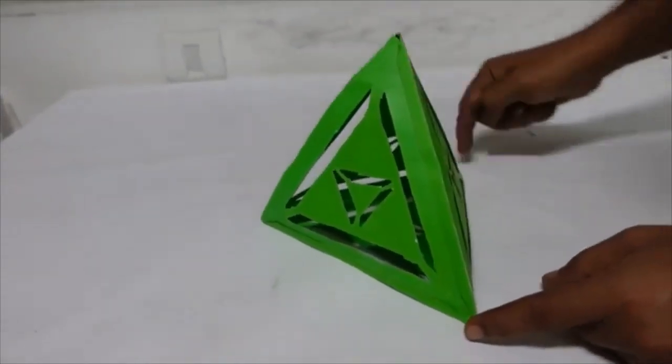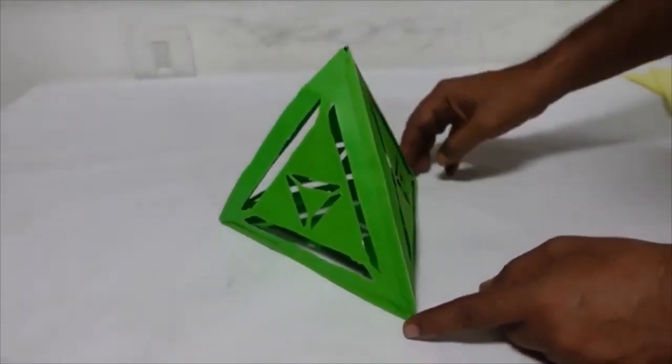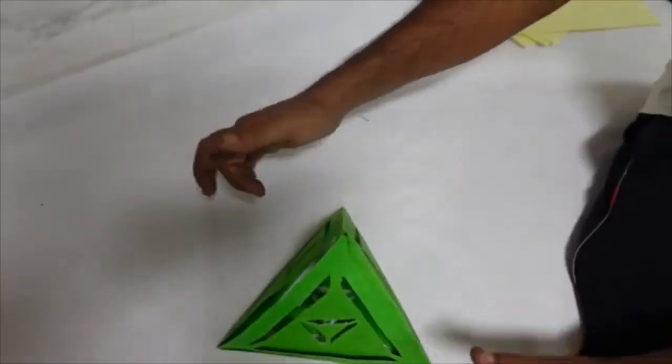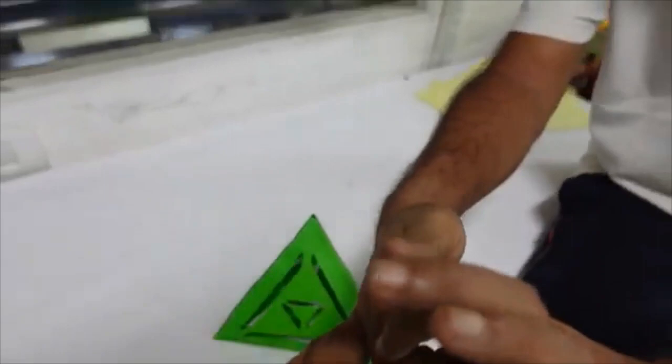There are four vertices, four points, four faces and six edges. And if we try to make it with fingers it will look something like this.